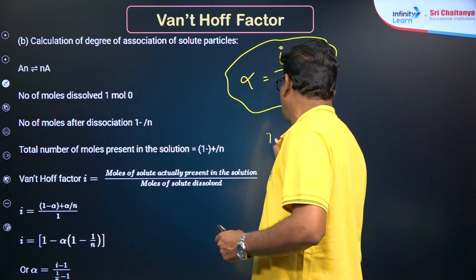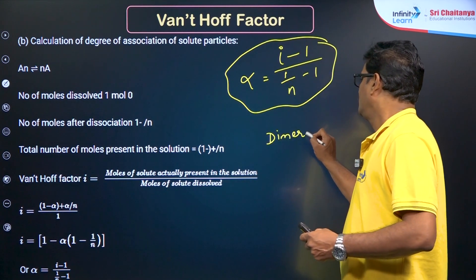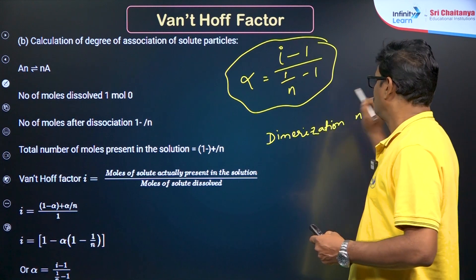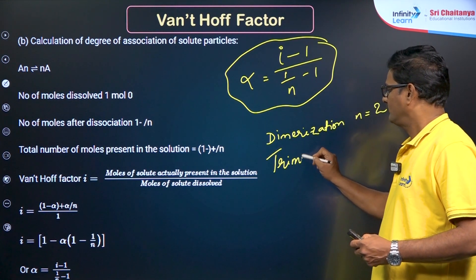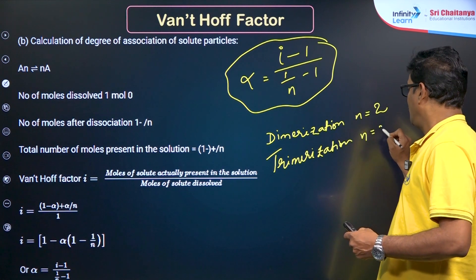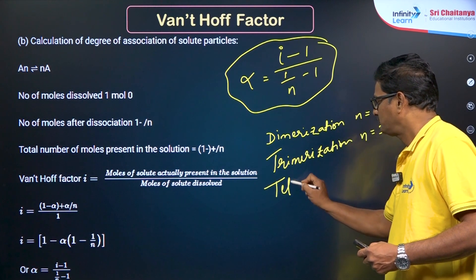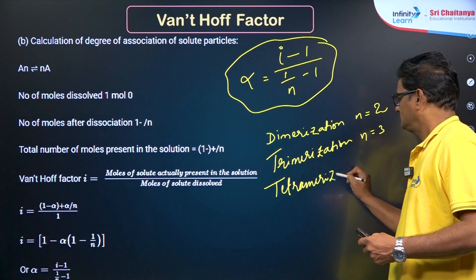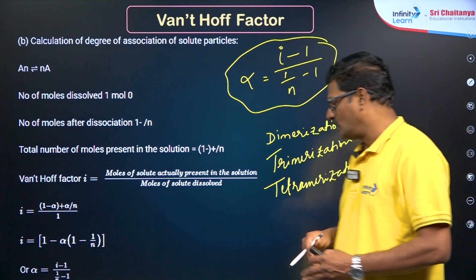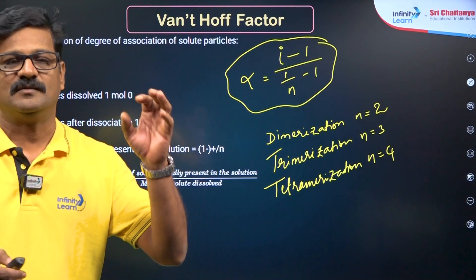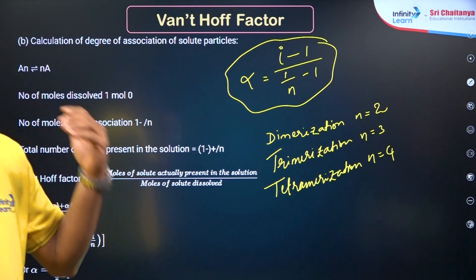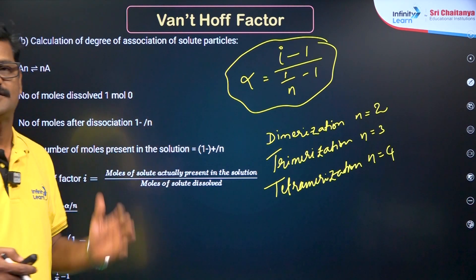For dimerization, two molecules join together, so N is taken as 2. For trimerization, N is taken as 3, and for tetramerization, N is taken as 4. These Van't Hoff factor tricks can be used directly for theoretical, logical, and numerical questions in the NEET examination.